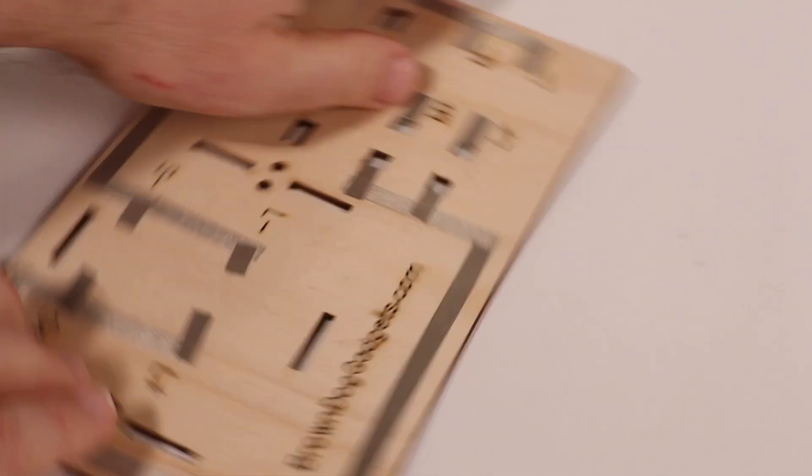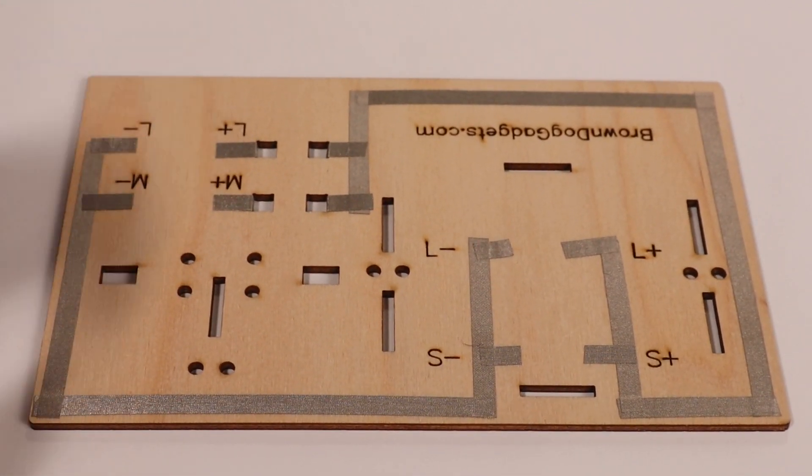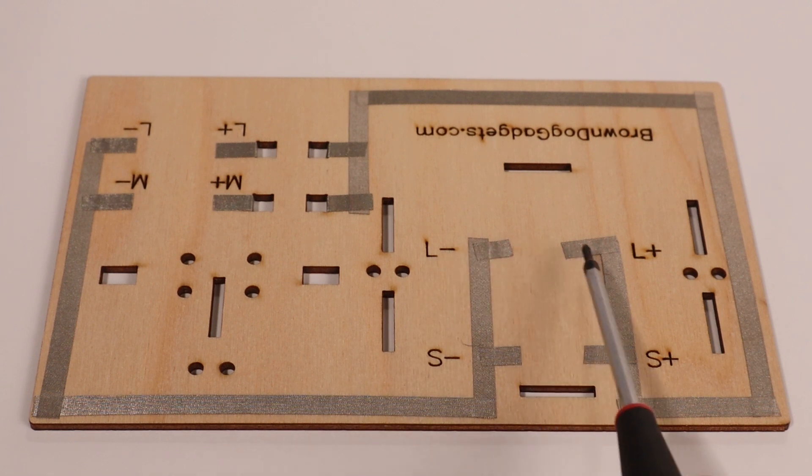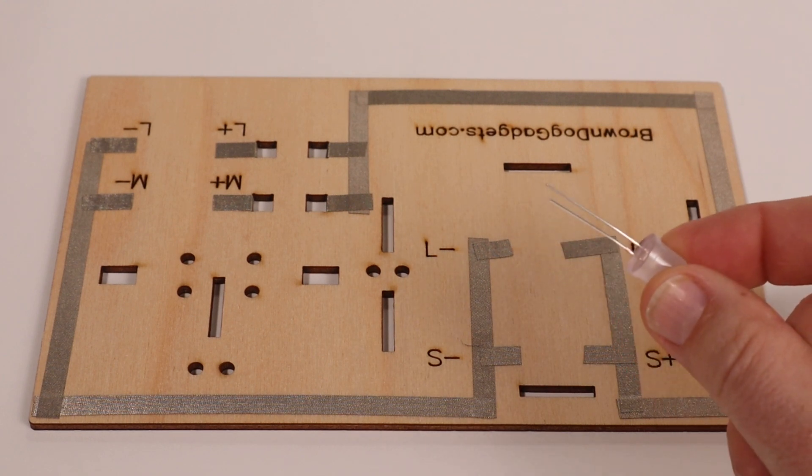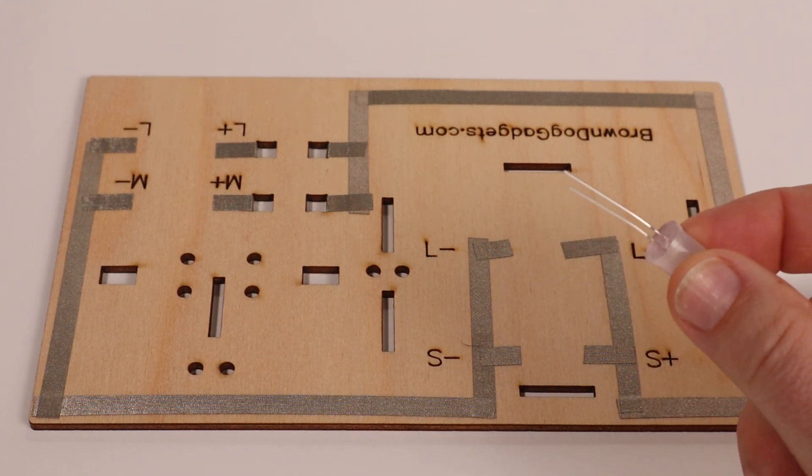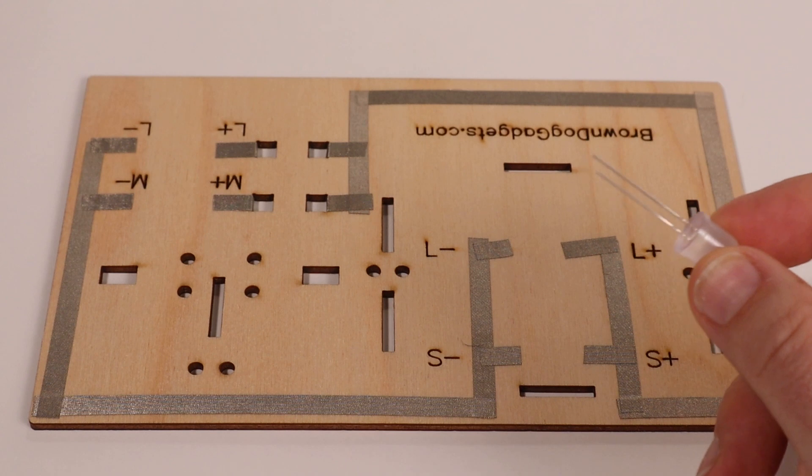Next, we'll add the white LED to the base. You might want to turn the base around so that the lettering is facing you. We'll see an L minus and L plus in the center of the section where the house will sit. An LED has a positive and negative leg. The positive leg is longer than the negative leg.